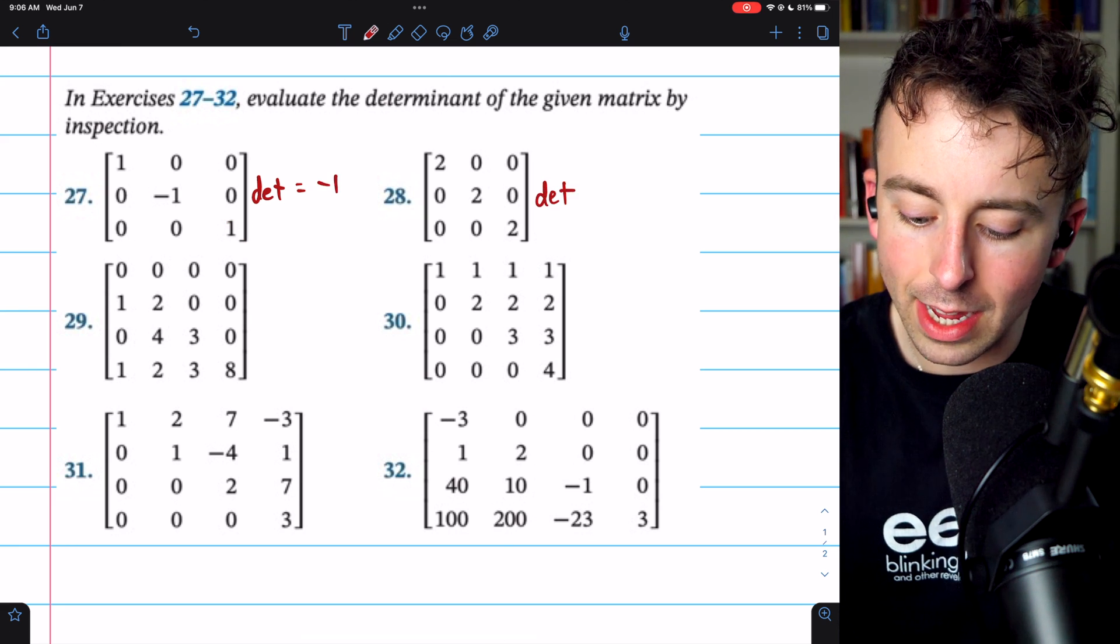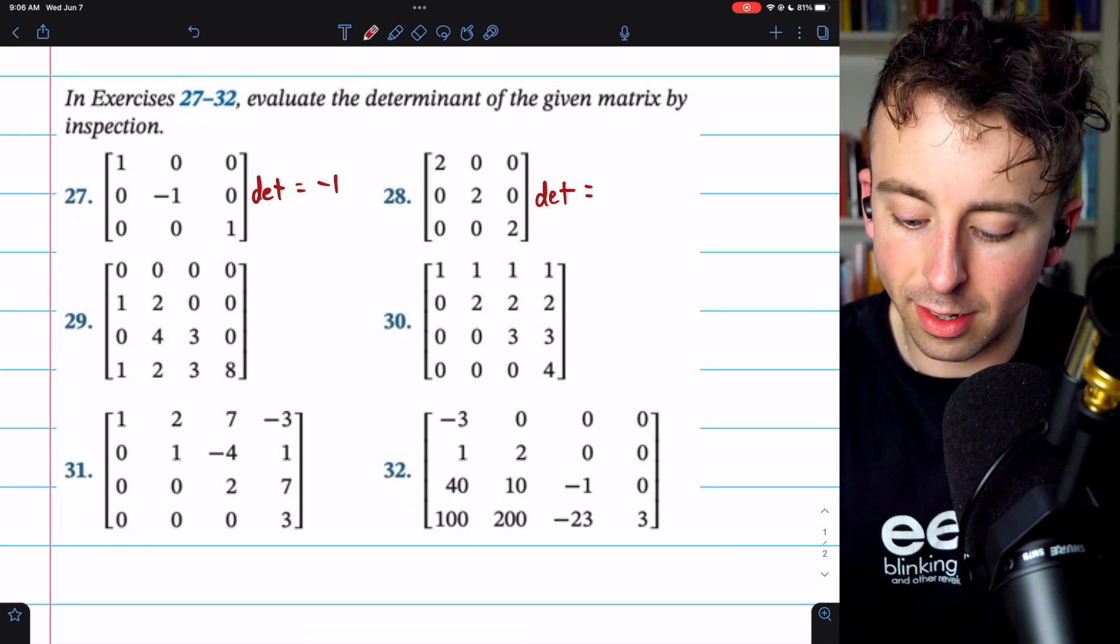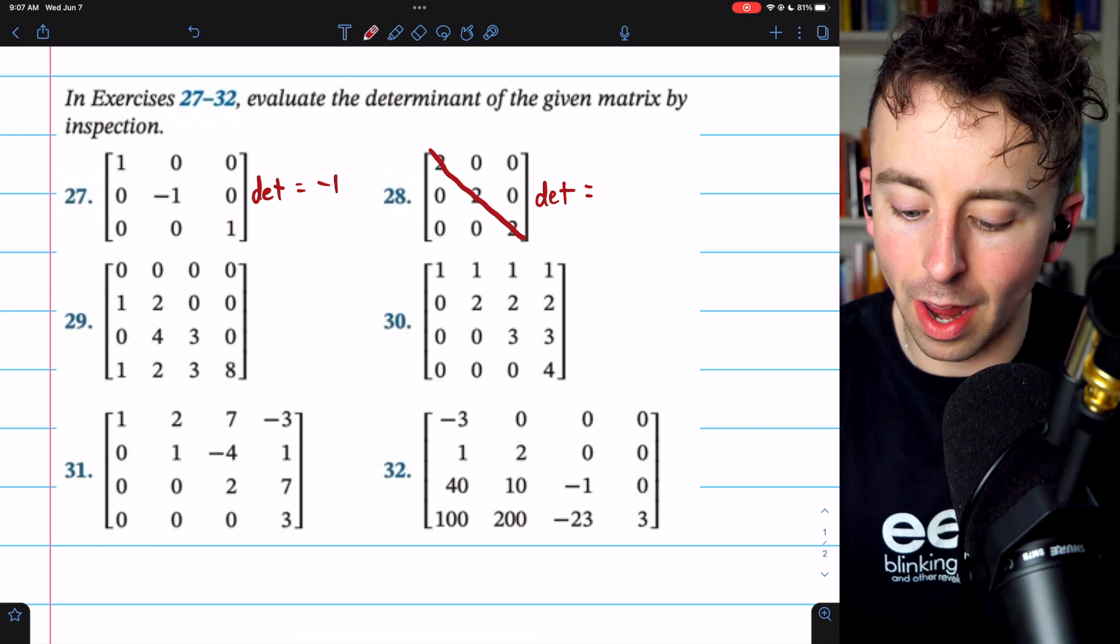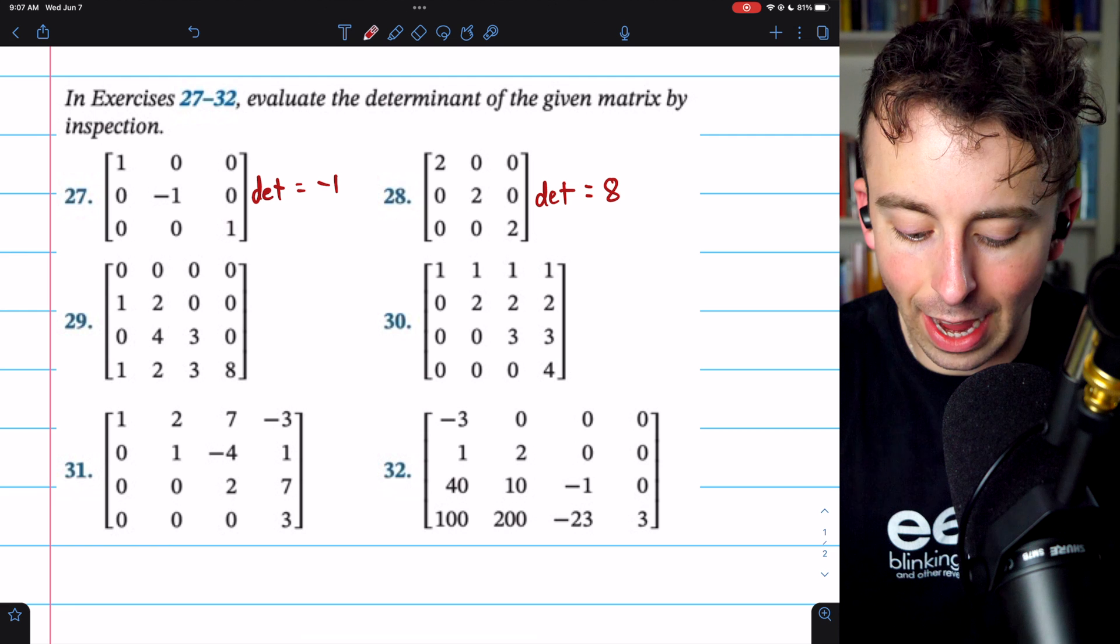The matrix in problem 28 is also a diagonal matrix. Its determinant can be found by just multiplying across the main diagonal. That's 2 cubed, which is 8.